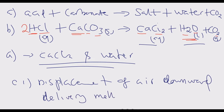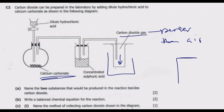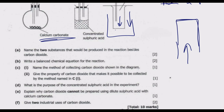The method is displacement of air downward delivery. The other method we need to know is displacement of air upward delivery, which is used for gases that are less dense than air, such as hydrogen or ammonia. Because they are less dense they rise upward, so you collect them using the upward delivery method.